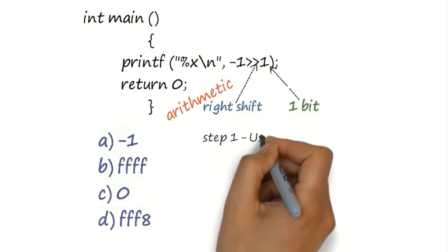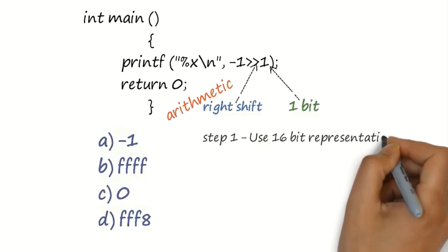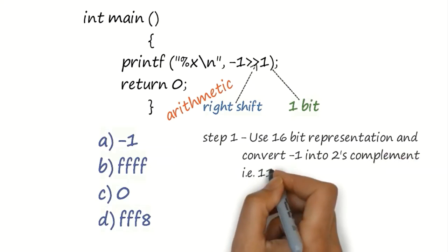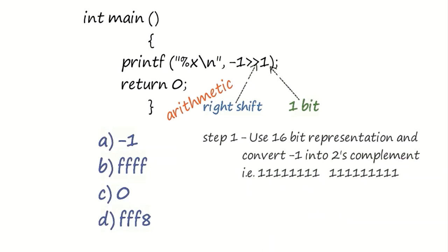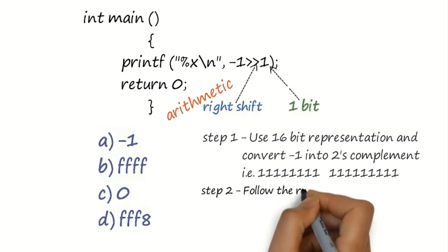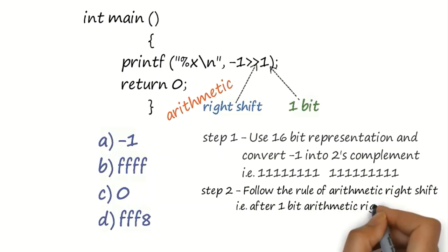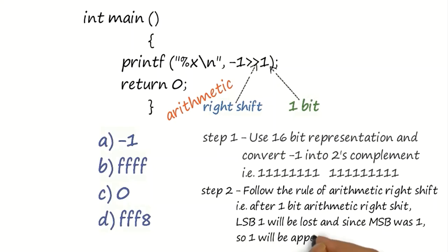While solving the previous problem, I already explained that negative numbers need to be converted to 2's complement. Therefore, minus 1 will be converted to 16-bit 2's complement format. And as per the rule of arithmetic right shift, extreme right 1 bit will be lost. And since MSB was 1, therefore extreme left bit will be replaced by 1.